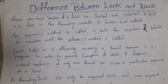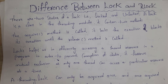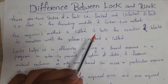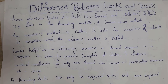Next I will explain the difference between Lock and RLock. There are two states of lock: locked and unlocked. Lock is a class in the threading module, and it contains two methods: acquire and release. When the acquire method is called, it locks the execution and blocks execution until the release method is called. Whenever we call acquire it will lock execution, and if you want to unlock it, you need to use the release method.